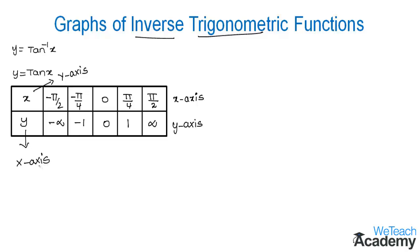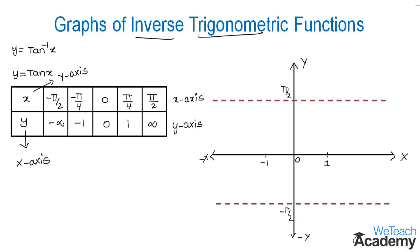Let us consider a graph where π/2 and -π/2 correspond to infinity. The ordered pairs are: -π/4, -1 gives us a point; 0, 0 gives us a point here; and π/4, 1 gives us another point.